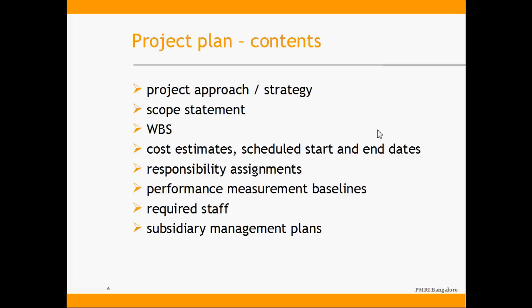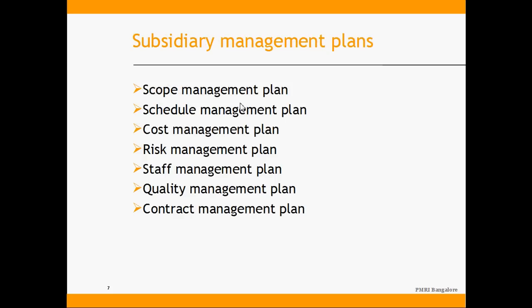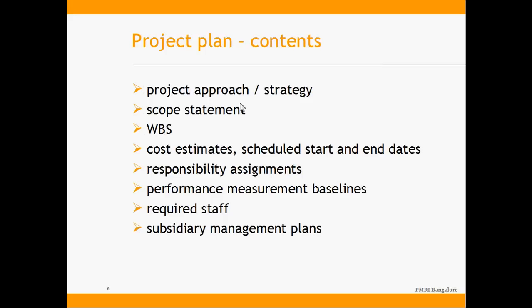The typical contents of a project management plan include: first, the project approach or strategy — whether to follow a tight waterfall model, an iterative model based on rapid prototyping, whether to outsource work, use reusable components, or develop reusable components during execution. Then a detailed scope statement is part of the plan, along with the WBS — once scope is defined, it gets decomposed into the work breakdown structure.